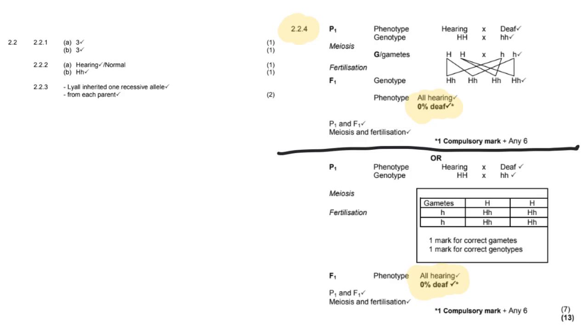My advice is to always use a punnett square. I do not like line diagrams. I'm really not a big fan of them. They often lead to inaccuracies and mistakes. But it depends, of course, on what your teacher has taught you and what you feel comfortable with. But I would often do this option over here. This is the much clearer, simpler, less likely to get wrong option.